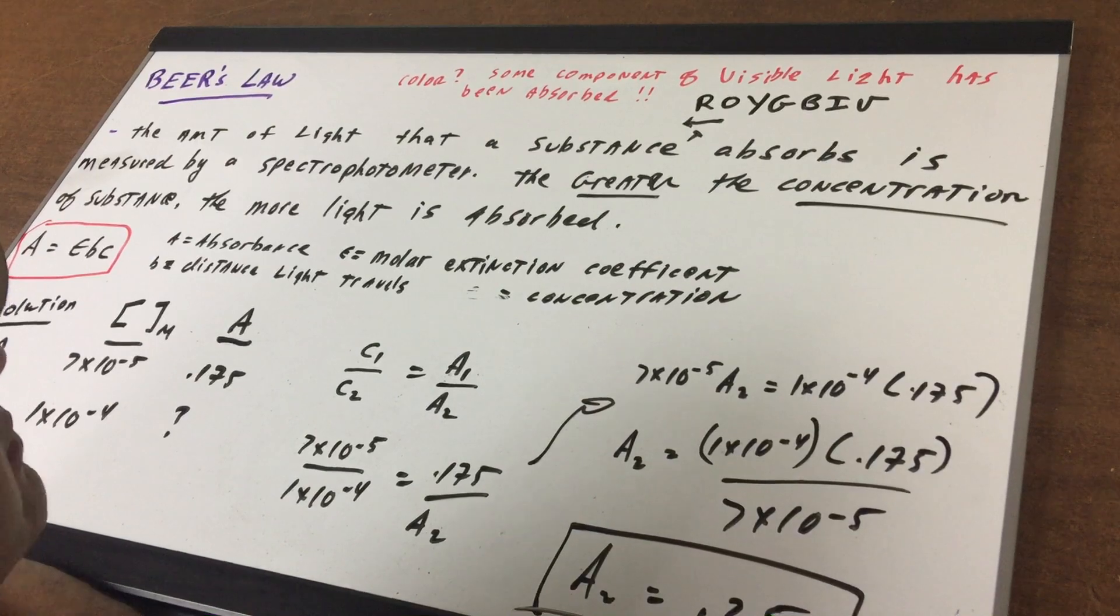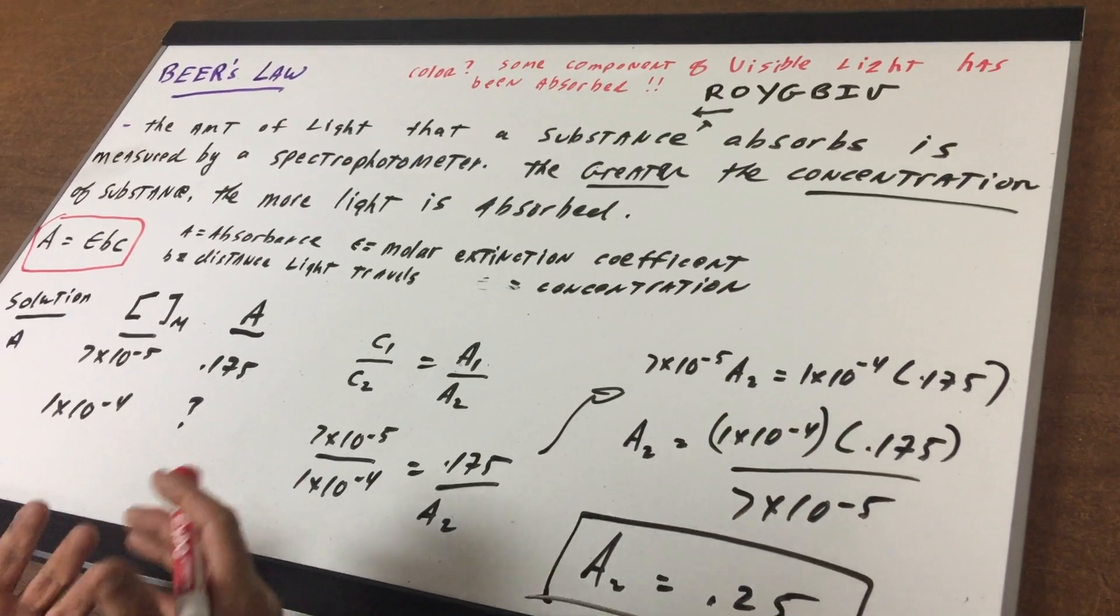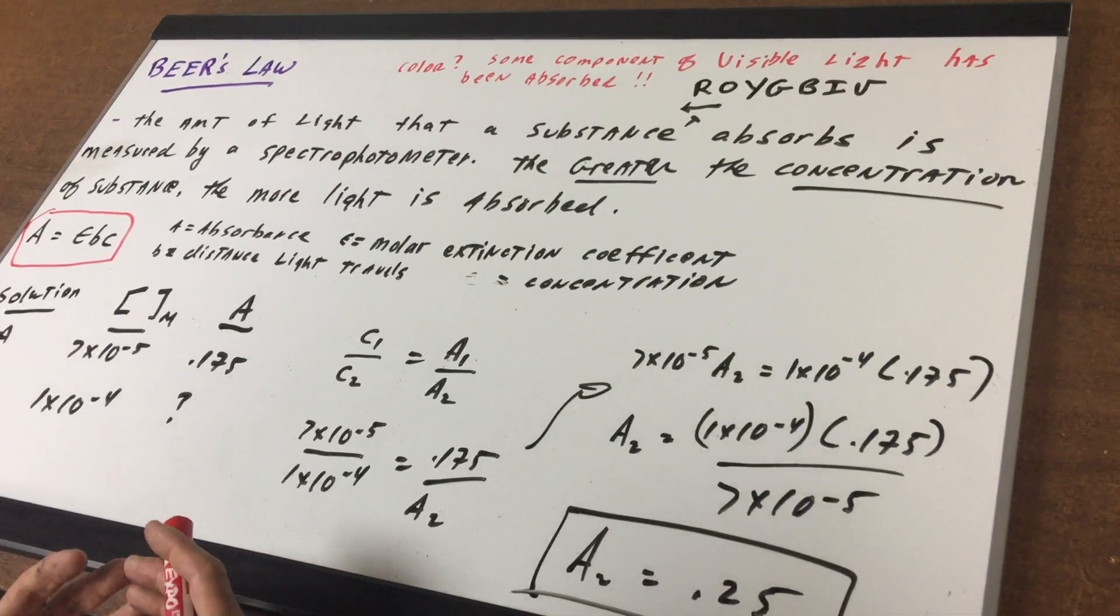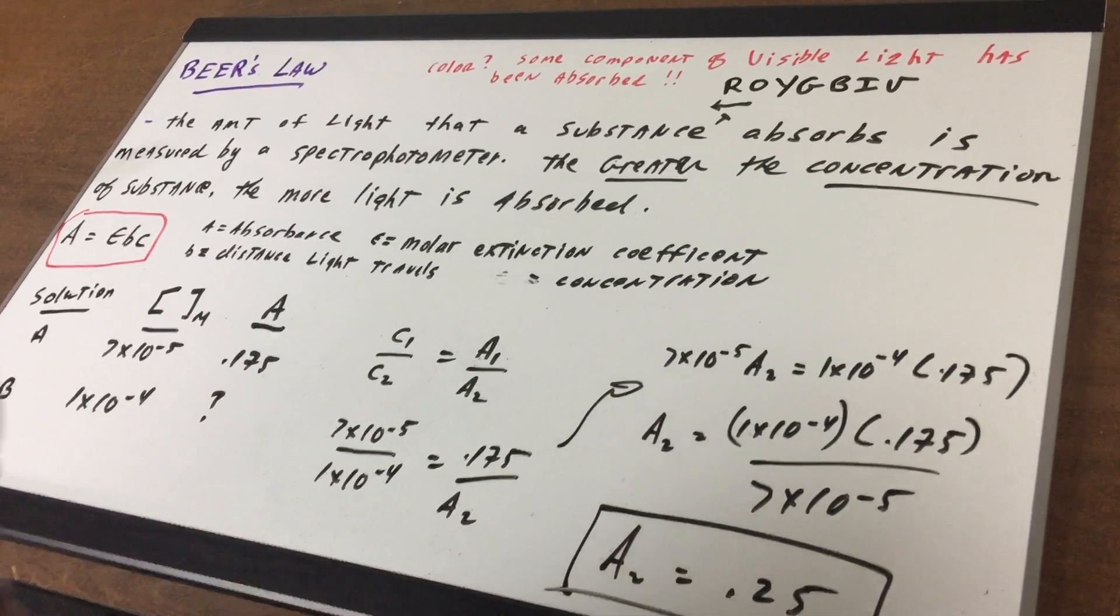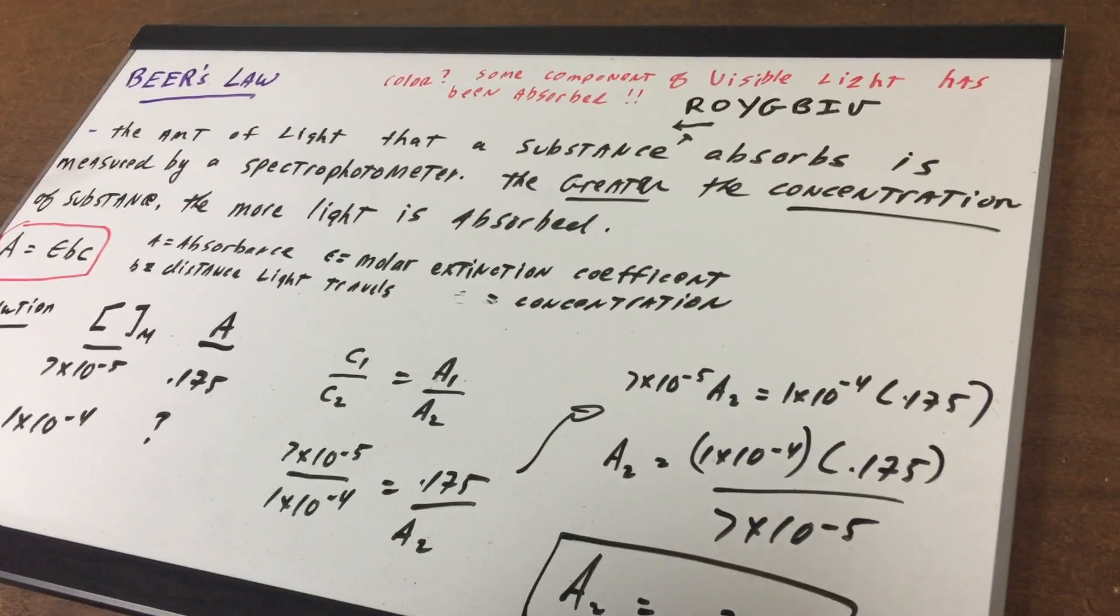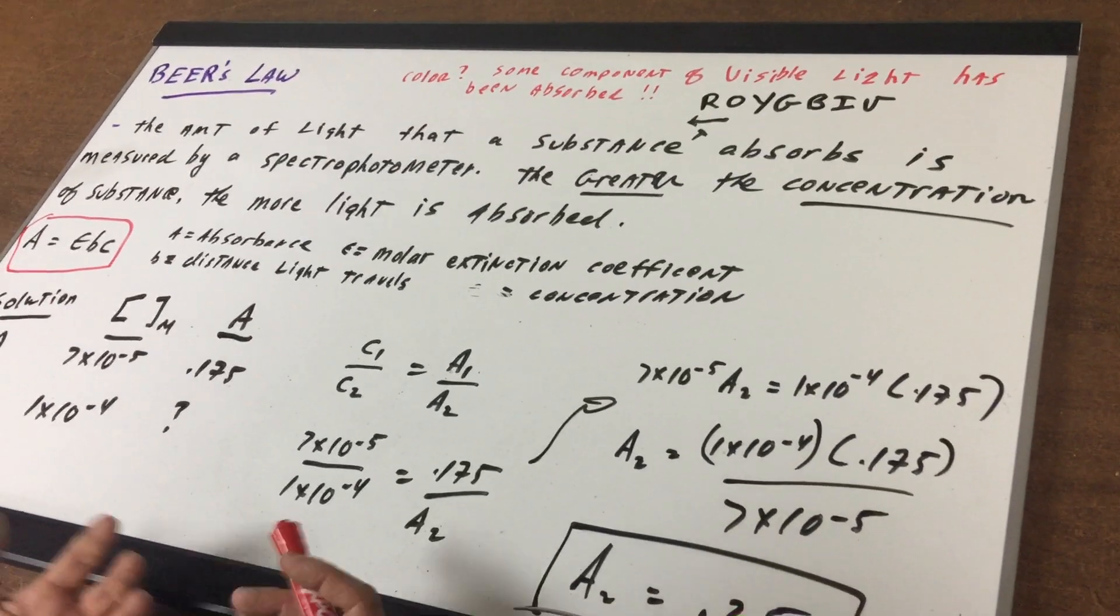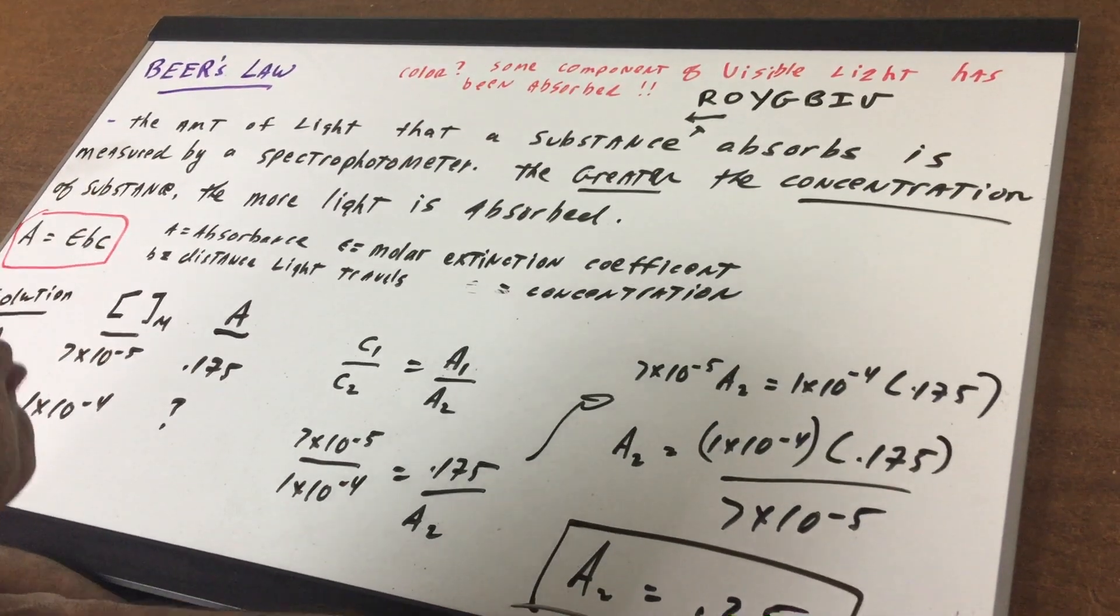Color is a component of light, and if you absorb one of the light components, you would see what we call the complementary color. For example, if you absorb red light, that means the color that you actually see is green. If you were to absorb orange light, you actually see the complementary color of blue.